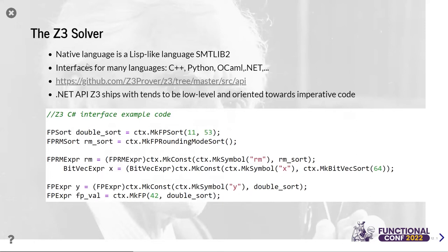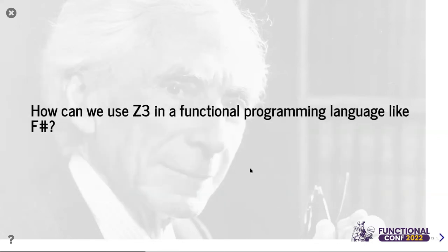The native language for Z3 is SMT-LIB2, which is a sort of Lisp-like language, but there are interfaces for many languages: C++, Python, and .NET. The interfaces tend to depend on the host language — Python's interface is relatively high level, while the .NET interface for C# is very low level. What we want to consider is how we can use Z3 in a functional programming language at a high level, reusing built-in language facilities without defining custom types and operators.